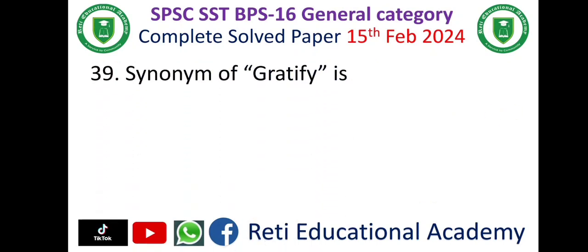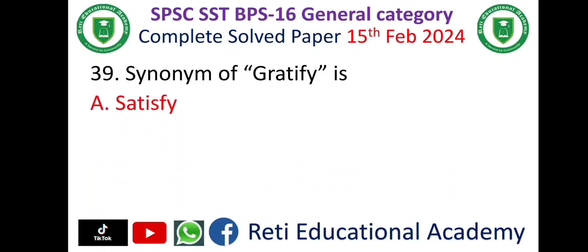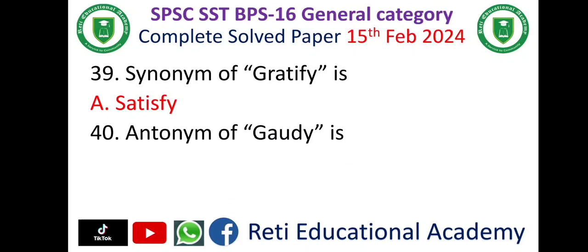Question number thirty-nine: Synonym of 'gratify' — the correct answer is A, Satisfy. Question number forty: Antonym of 'gaudy' — the correct answer is D, Drab.